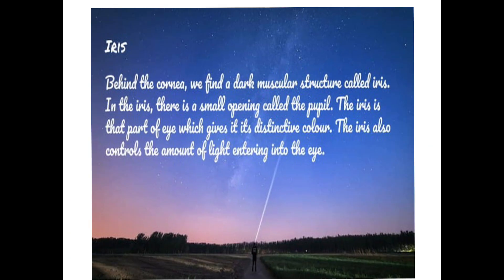Iris. Behind the cornea we find a dark muscular structure called iris. In the iris there is a small opening called pupil. The iris is the part of eye which gives it its distinctive color. The iris also controls the amount of light entering into the eye.